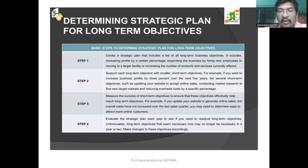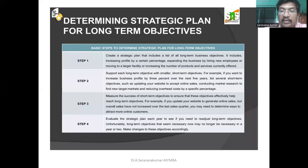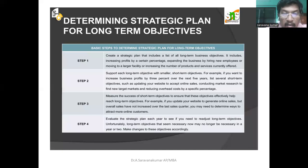Mission is a short-term objective, so you frame your objective for the long run. Step two: support each long-term objective with smaller short-term objectives. For example, if you want to increase business profit by three percent over the next five years, list several short-term objectives such as updating your website to accept online sales, conducting market research to find new target markets, and reducing overhead costs by a specific percentage.